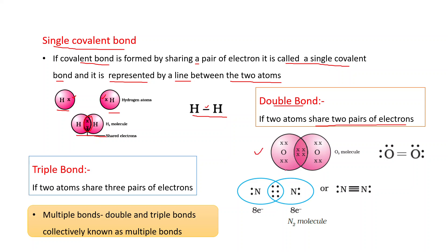Example is O₂. These two oxygen atoms share two pairs of electrons, and in these two pairs each oxygen atom contributed two electrons. A double bond is formed, represented with two parallel lines. The electrons which are not taking part in bond formation are known as non-bonded electrons or lone pairs of electrons.